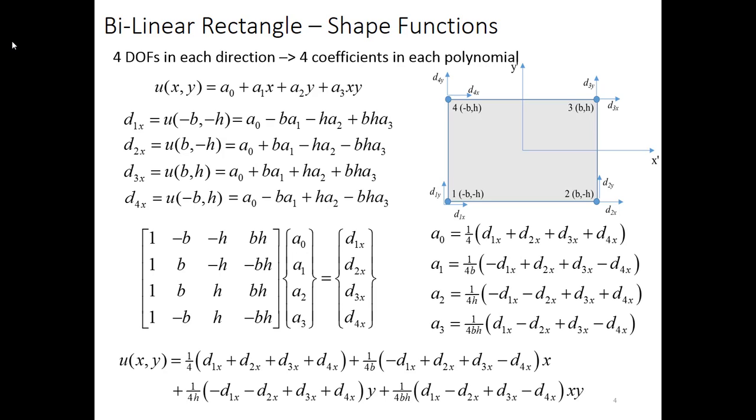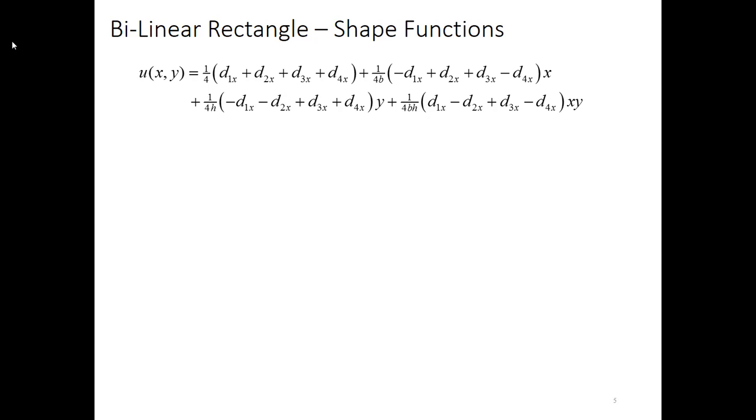So I plug those into my expression for u. I'm not done yet. I've just eliminated the a terms. Now I have my displacement field defined in terms of the d's, but what I want to do is gather all the terms for each degree of freedom. So I'm going to have something multiplied by d1x plus something multiplied by d2x and so on. That something in each case is going to be the shape function. Here's that expression again, and when I rearrange the terms, I end up with something multiplied by d1x, and that something happens to be 1 over 4bh times (b minus x) times (h minus y). And then you have similar functions in front of d2x, d3x, and d4x. And again, you'll have the same functions if we did this all for the v or y direction.